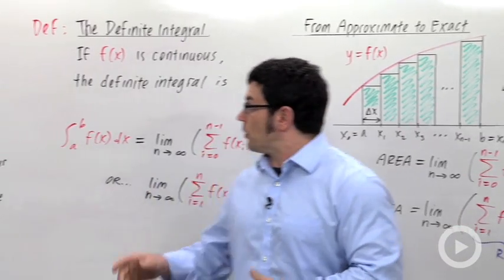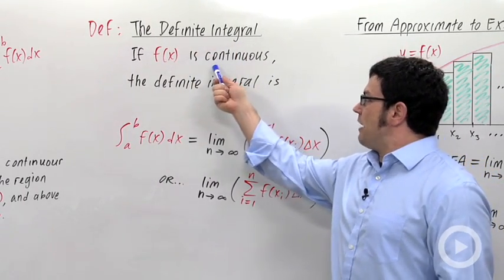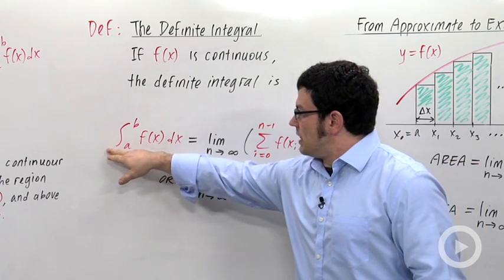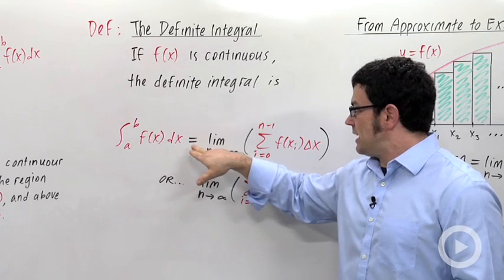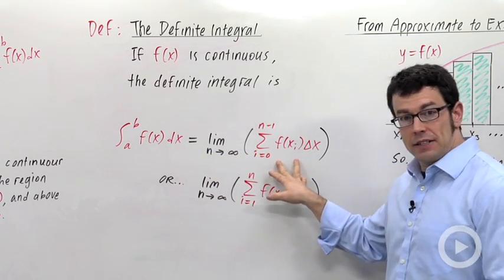This idea of the limit that gives me the exact area is so important that we give it a name, and it's called the definite integral. So here's my definition of definite integral. If a function f is continuous, we define the definite integral as the integral from a to b of f(x)dx. This is the limit as n approaches infinity of the left-hand sum.